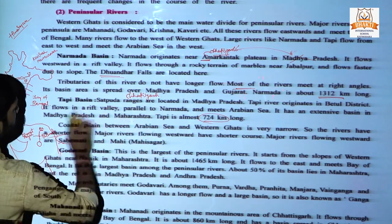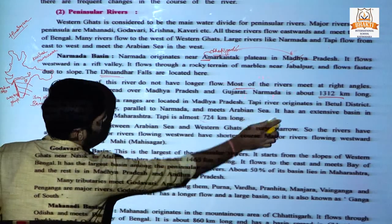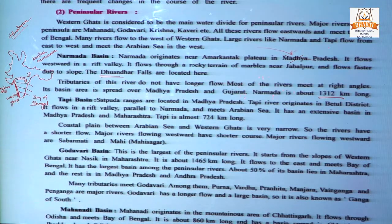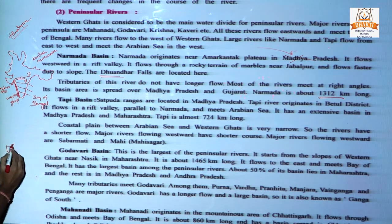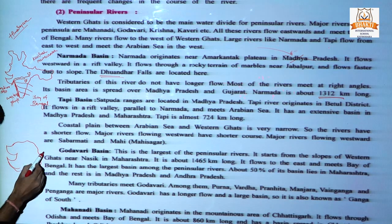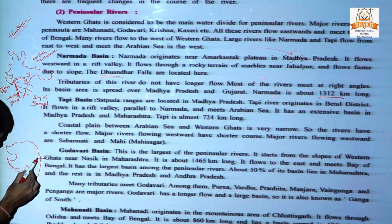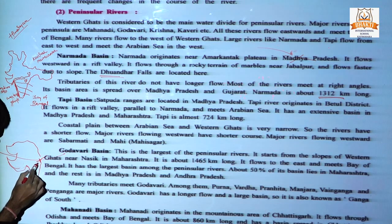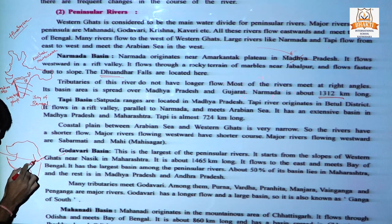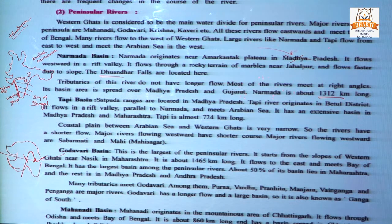Mahi river is the only river in India which crosses the Tropic of Cancer two times. Looking at the Gujarat map, Mahi originates there, and when it first enters, it cuts the Tropic of Cancer. Then its flow goes upward, and when it comes downward, it again cuts the Tropic of Cancer. So Mahi is the only river that crosses the Tropic of Cancer twice.